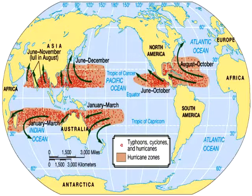Hurricanes occur around the globe; however, they are not always called hurricanes. We only speak of hurricanes in the Atlantic and Eastern Pacific tropical regions. A hurricane in the western Pacific is called a Typhoon, while in the Indian Ocean and in the region around Australia, they are simply called Cyclones.